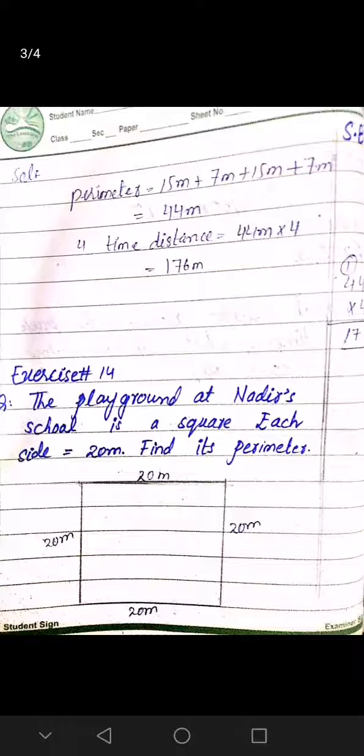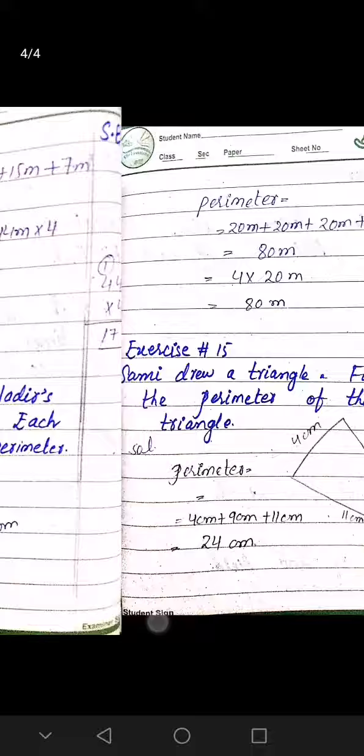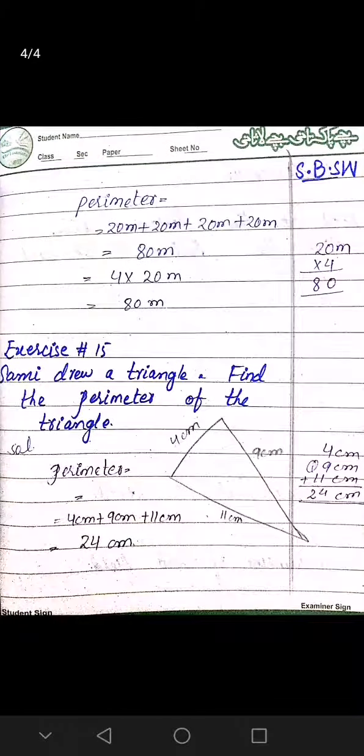And after this we have exercise 14. The playground at Nadir's school is a square. Each side is 20 meters. Find its perimeter.